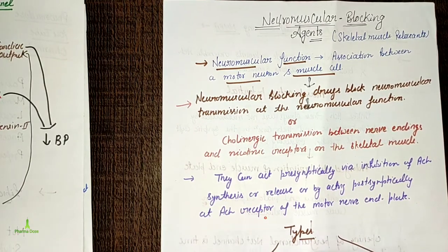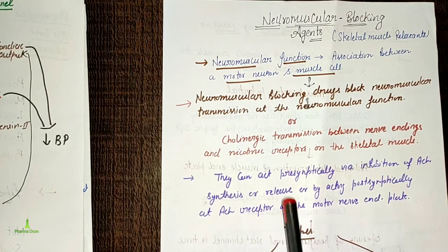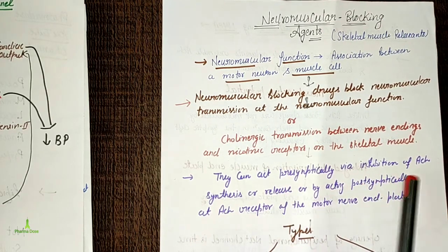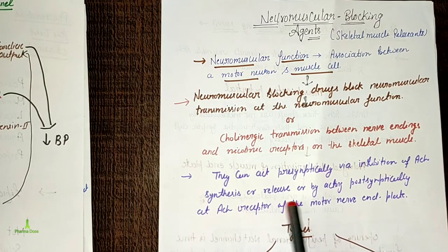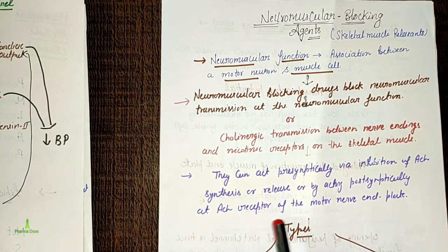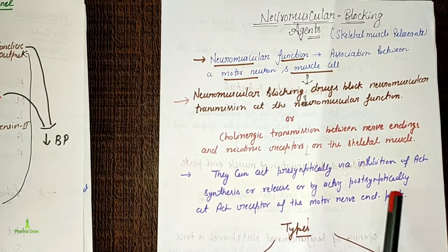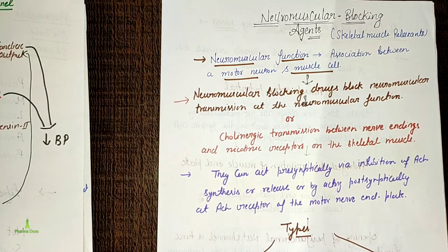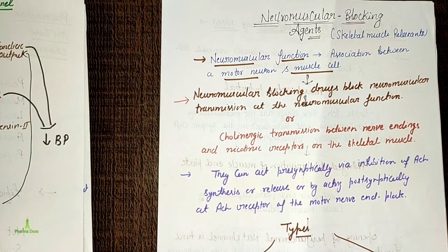Neuromuscular blocking can occur pre-synaptically by inhibition of acetylcholine synthesis, or post-synaptically by acting on acetylcholine receptors at the motor nerve end plate. Pre-synaptically, the drug blocks acetylcholine synthesis to block transmission between the junctions. If acetylcholine is not present, there will be no communication. We have to block either acetylcholine synthesis or the receptor.